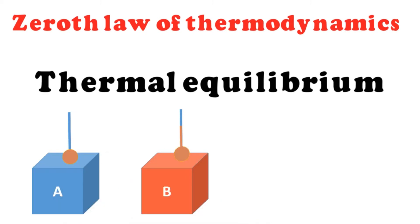If we have two objects A and B, and both objects have different temperatures. Let's suppose object A is a cooler body and object B is a hotter body.